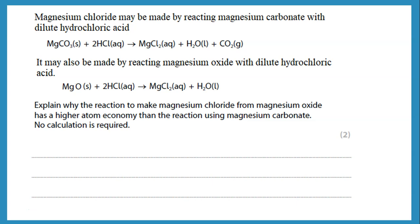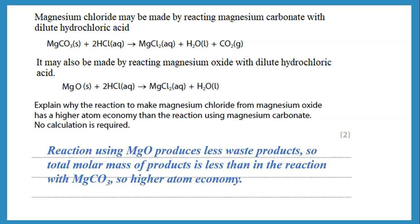Remember, atom economy is the MR of the substance over the total MR of the products. That means if I have many side products, the percent atom economy would be less. But if my reaction is producing the required substance alone or with only one side product, that's better than having a lot of side products. The reaction from magnesium oxide would have a higher atom economy because it produces less waste products, so the total molar mass of products is less than in the reaction with magnesium carbonate, giving a higher atom economy.